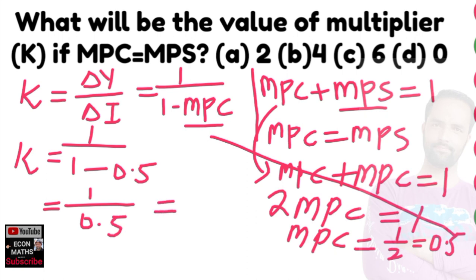Which gives us 1 upon 0.5 comes out to be 2. That means the value of multiplier will be equal to 2. So the correct option should be option A. I hope I make myself clear in this video. Thank you.